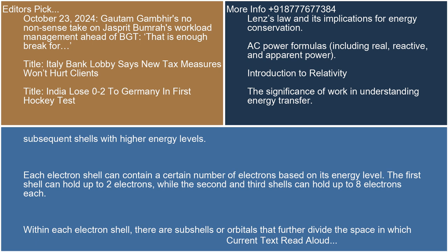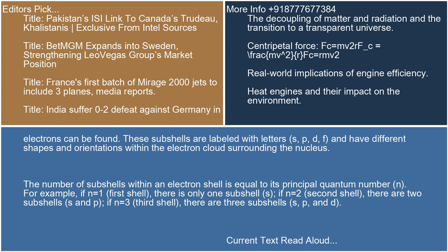Within each electron shell, there are subshells or orbitals that further divide the space in which electrons can be found. These subshells are labeled with the letters S, P, D, and F, and have different shapes and orientations within the electron cloud surrounding the nucleus.